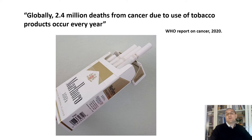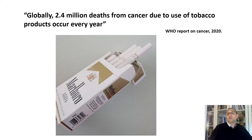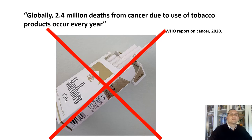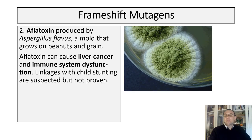Globally, 2.4 million deaths from cancer due to use of tobacco products occur every year. Frameshift mutagens are a major cause of cancer. The frameshift mutagen benzo[a]pyrene is present not only in soot but in any kind of smoke. Cigarette smoking can cause all kinds of cancers, but the most common is lung cancer. The most important thing you can do to prevent lung cancer is not to start smoking, or to quit if you smoke. Avoid secondhand smoke — smoke from other people's cigarettes, cigars, and pipes. Make your home and car smoke-free.